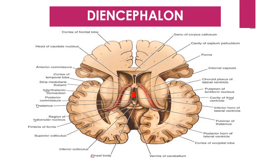The diencephalon forms a central core of the brain just superior to the midbrain. As you can see from the diagram, it is almost completely surrounded by the two cerebral hemispheres on each side, and contains numerous nuclei involved in a variety of sensory and motor processing between higher and lower brain centers.